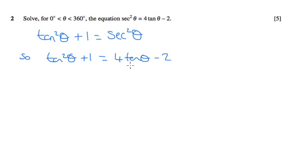Now, this is one of those hidden quadratics. So we can move everything over to the left. We'll have tan squared theta take away 4 tan theta, and plus 1, we've got, we're going to have a plus 2 as well. So that's going to be plus 3 altogether equals 0.